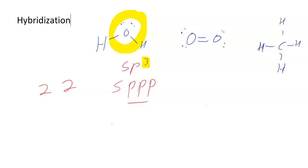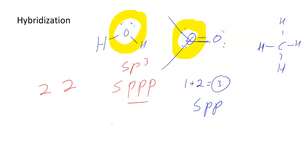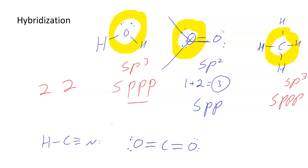Looking at another oxygen that has a double bond: a double bond still counts as one bond, so that's one position. With two lone pairs that gives three things total — three positions in space. We call that sp2 hybridized (short for s-p-p). The carbon with four bonds — regardless of whether they're single, double, or triple — four bonds give four positions in space, so that's sp3 hybridized.